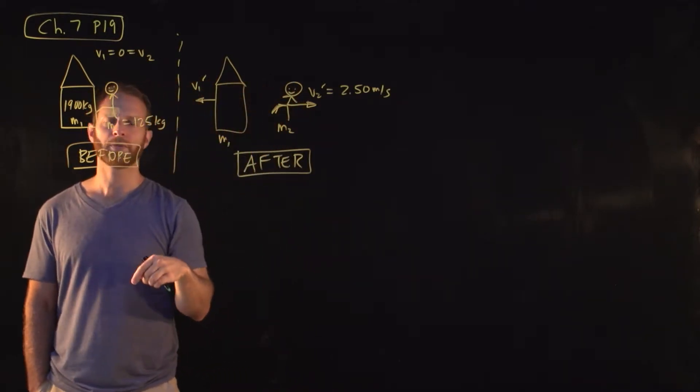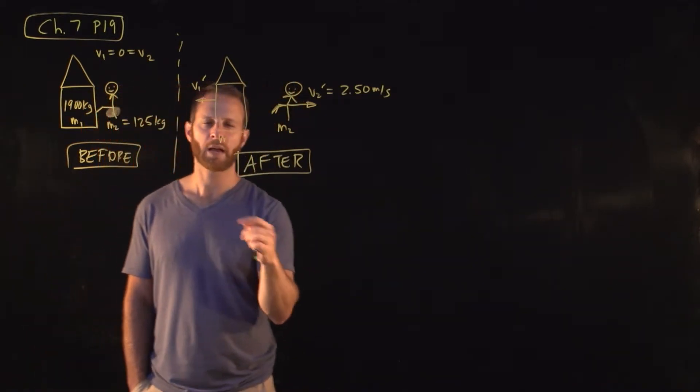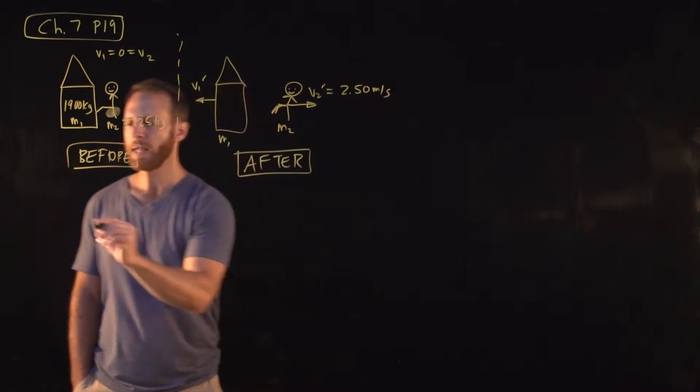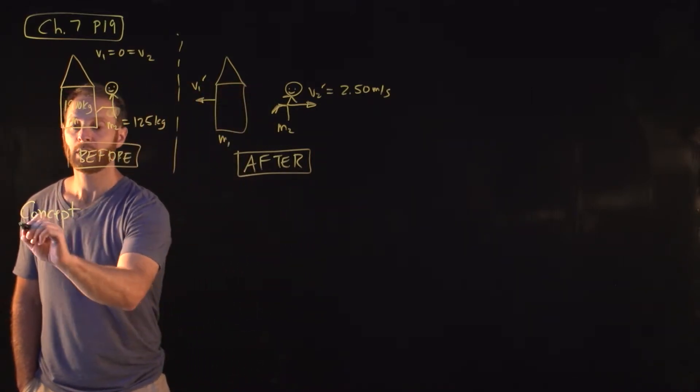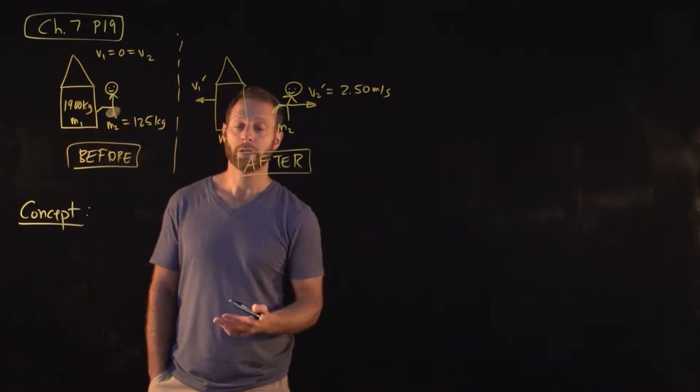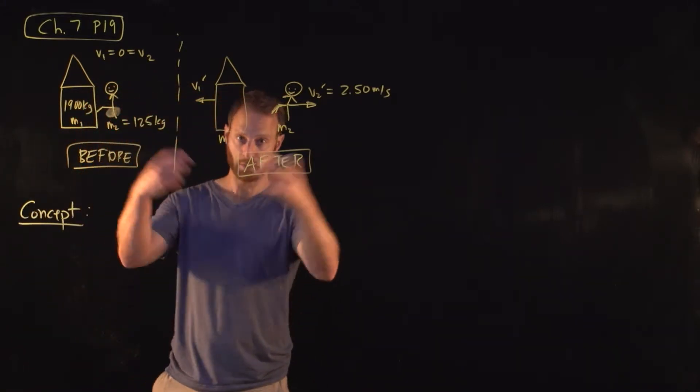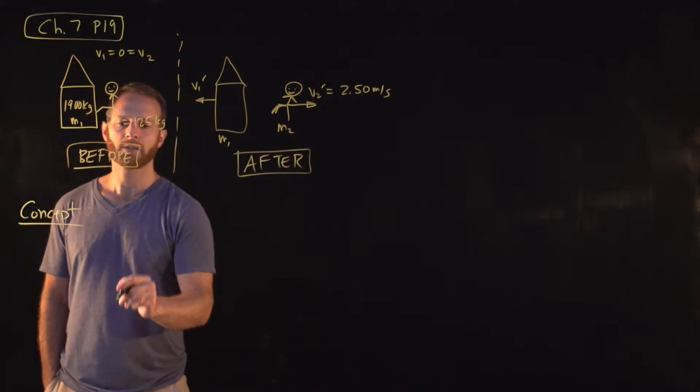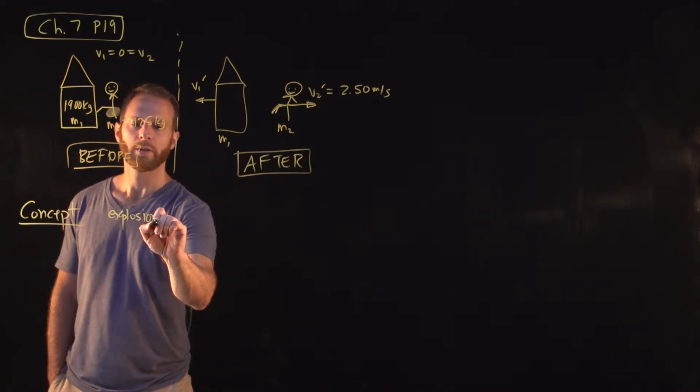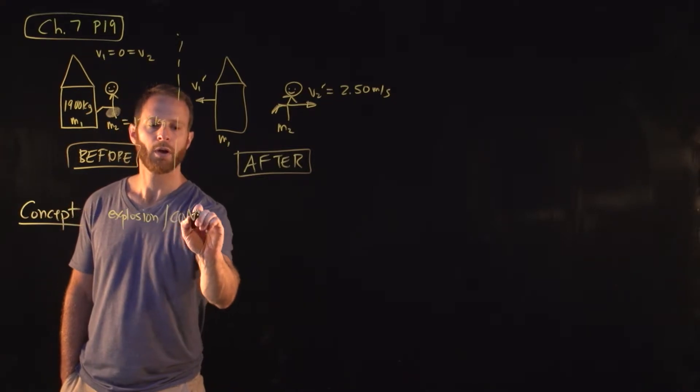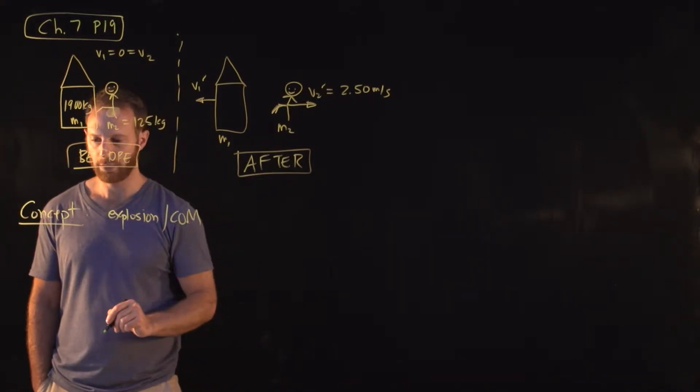Now, if we try to think about this problem in terms of forces and the amount of time acting, that may be a little bit difficult. So the thing to always try when you're dealing with anything with a collision or an explosion, which this would be, we would call this generically an explosion where things start at rest and they start moving in different directions. The concept to use here is collision or explosions. An explosion uses conservation of momentum.